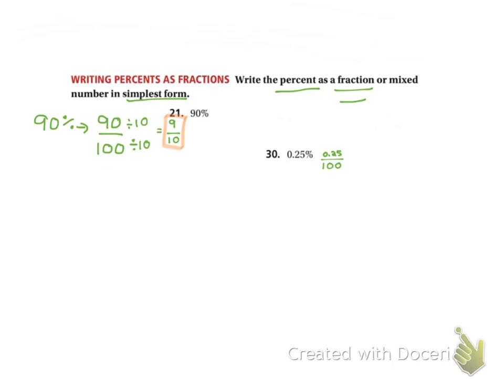This is where we had an issue. We can't have a decimal at the top of a fraction. So we have a couple of different options. We can move the decimal, or we can multiply by 100. Whatever way you find it easier. I find it easier to say 1, 2, I move the decimal two places.